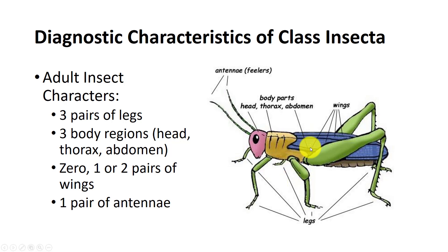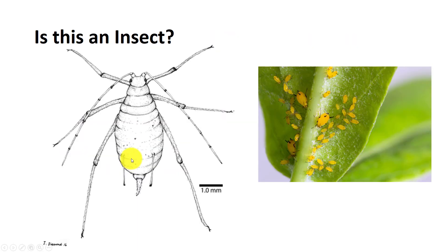This grasshopper has two pairs of wings and one pair of antennae. Is this an insect? Well, let's see if it fits the criteria. Does it have three pairs of legs? Yes, it does. Does it have three body regions?